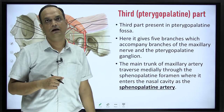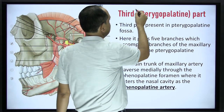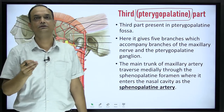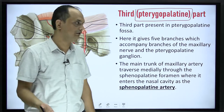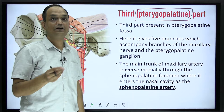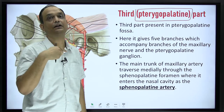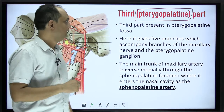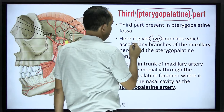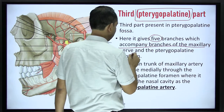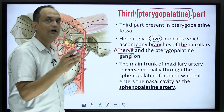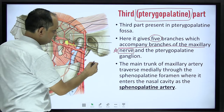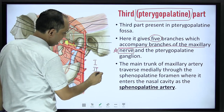What is the third part? The third part is known as the pterygopalatine part. Why is it known as the pterygopalatine part? Because this part enters inside the pterygopalatine fossa. This third part is actually the area which starts after the upper border of the lower larger head of the lateral pterygoid muscle. It gives around 5 branches which accompany branches of the maxillary nerve.